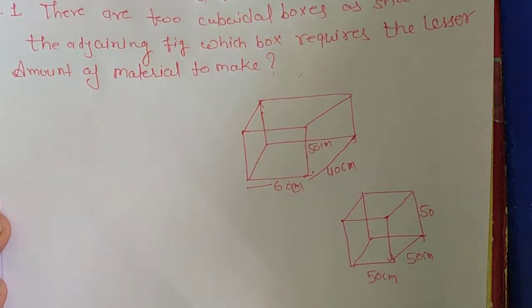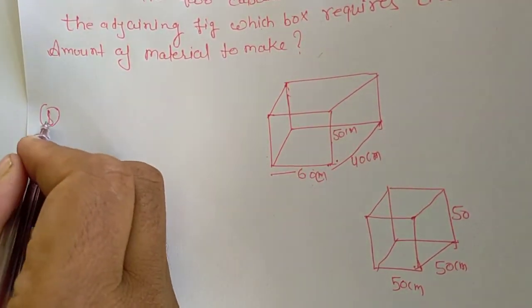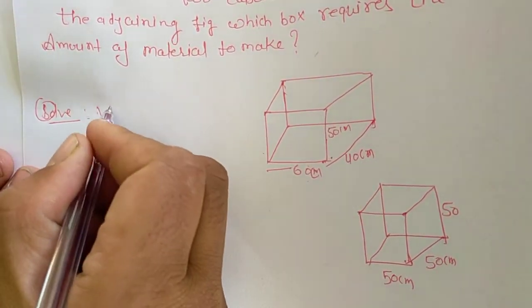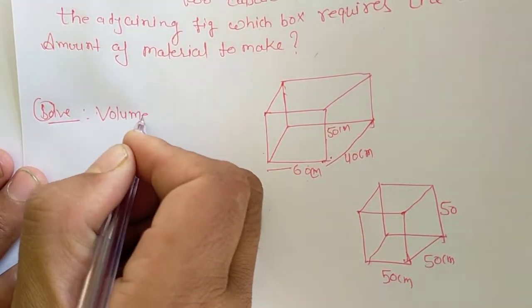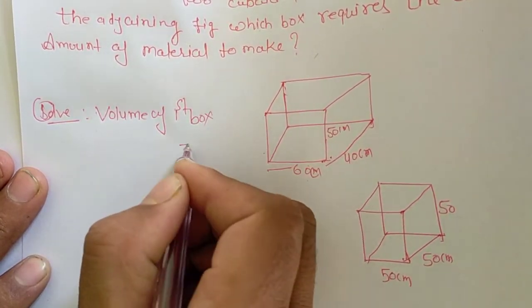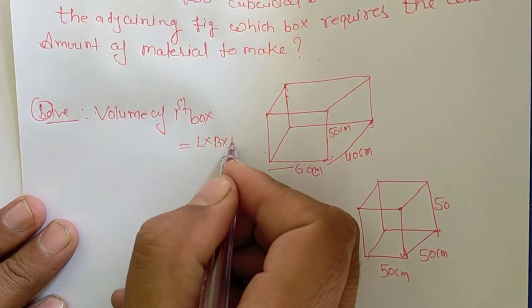So, volume of first box and volume of second box. Solution: Volume of first box. Volume of first box is equal to, if you have a cuboidal box, you have a cuboidal shape, then L into B into H.